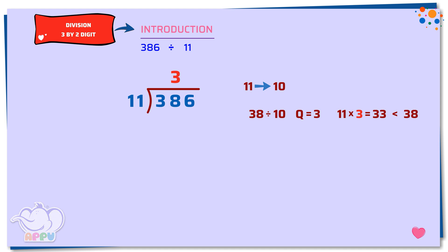Step 2. We multiply 11 and 3. We get 33. Step 3. We subtract 38 minus 33 equals 5. Next, we bring down the number in the ones place, which is 6. The number now becomes 56.